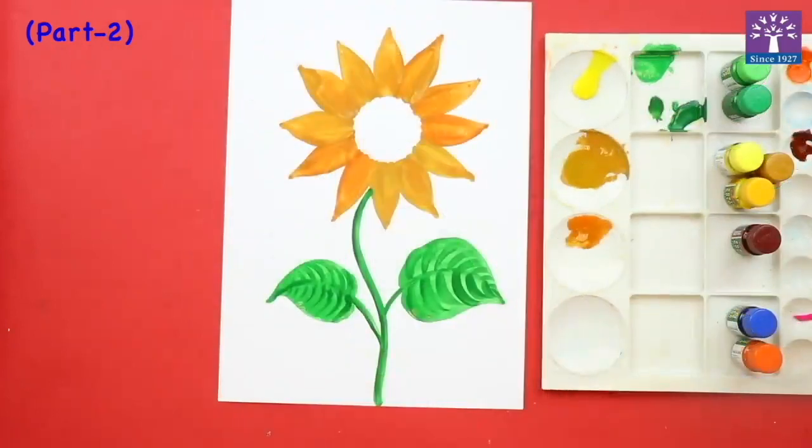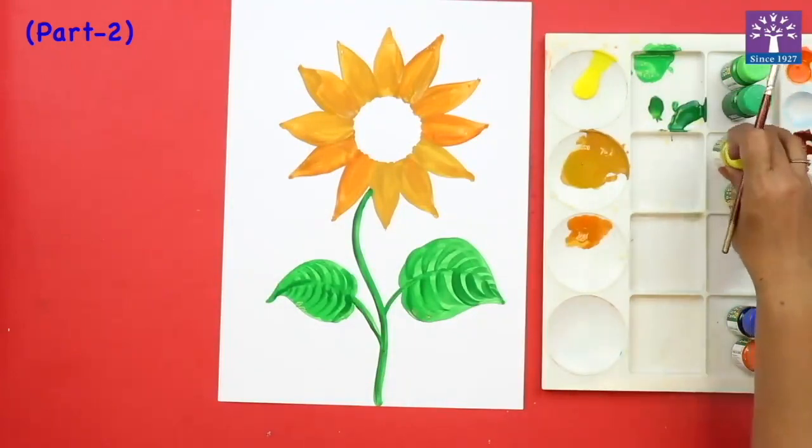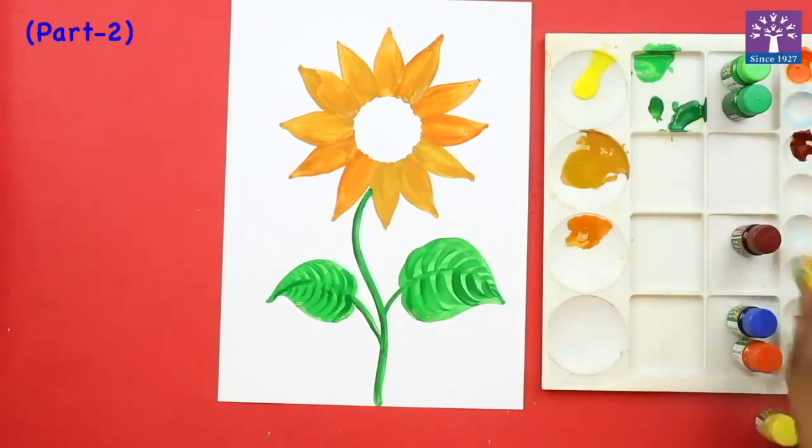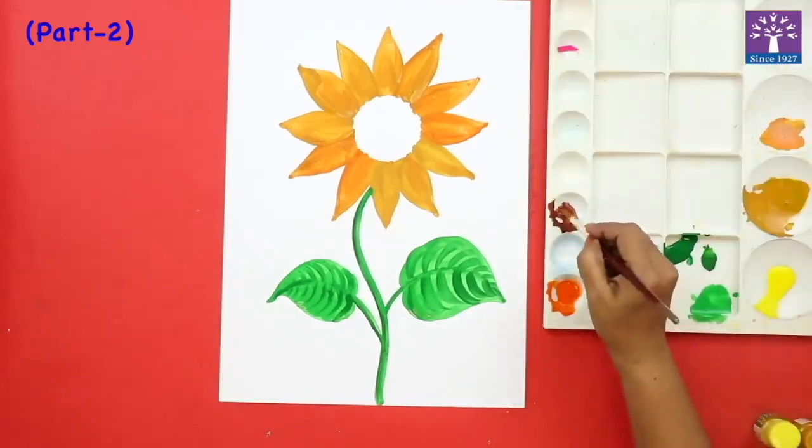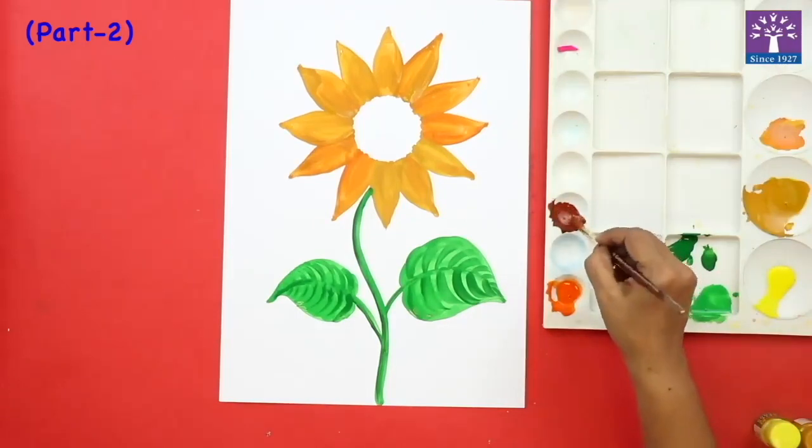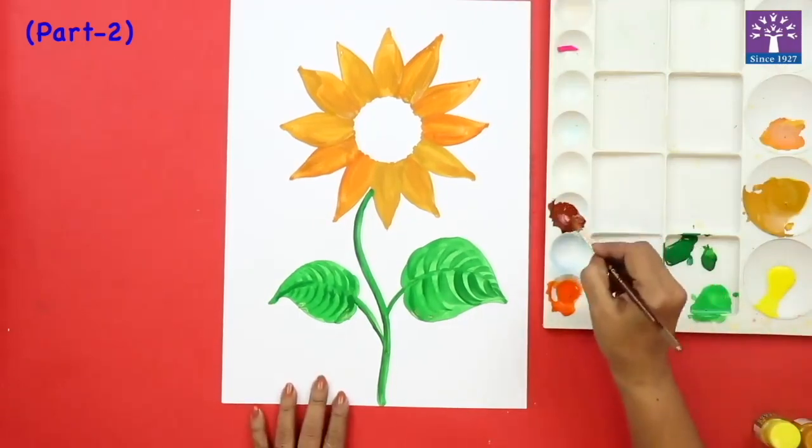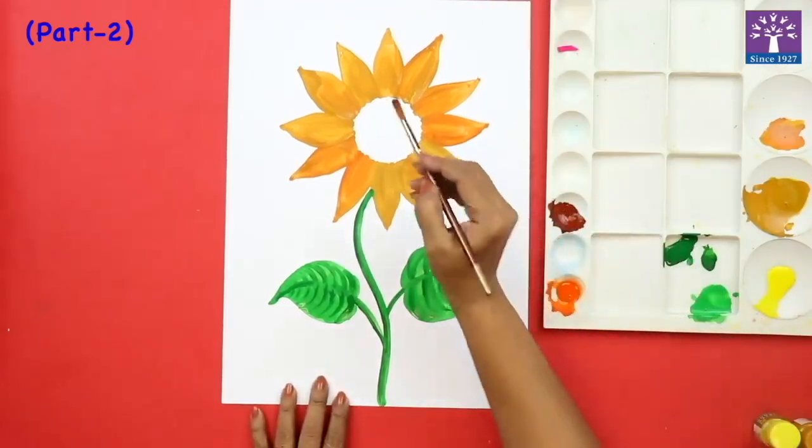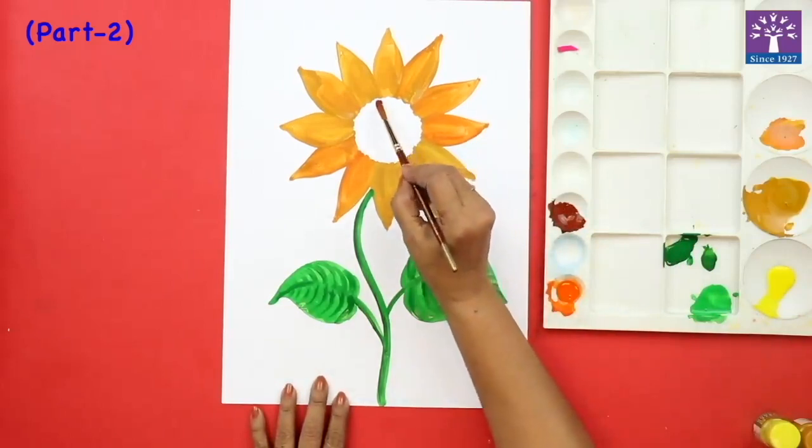So we have finished painting the leaves. We washed the brush clean. Now we are dipping our brush in brown color. I have kept brown color ready. I am dipping my brush in brown paint or poster color, and very gently I am going to dab.